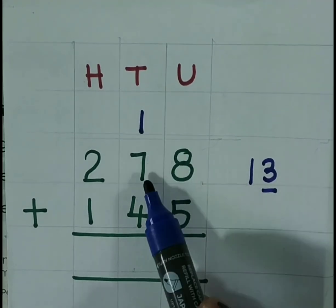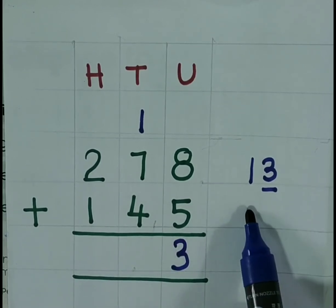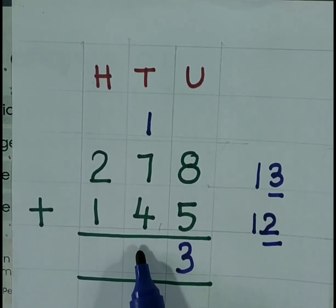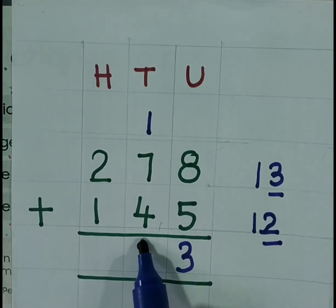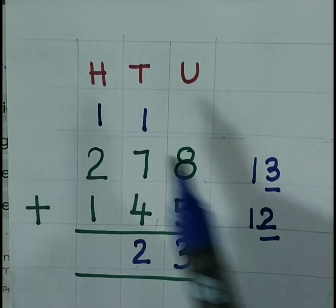1 tenths plus 7 tenths is 8 tenths. 8 tenths plus 4 tenths is 12 tenths. So this 2 tenths you will write at the 10th place and this one you have to carry at the 100th place.